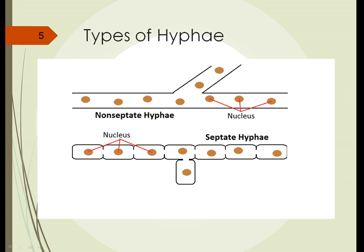This diagram shows the two types of hyphae. The top one is the non-septate hyphae — the individual cells aren't separated from each other and they form long tubes. The bottom one is the septate hyphae, where individual cells are separated by a wall called a septum, or septae in plural, and you can see openings between the cells.